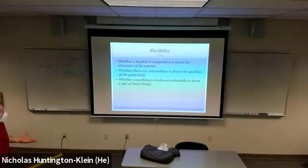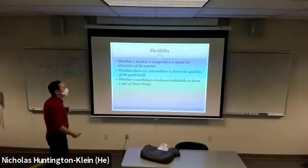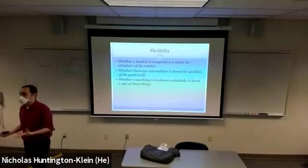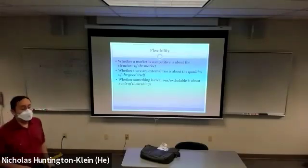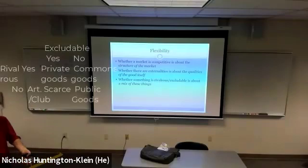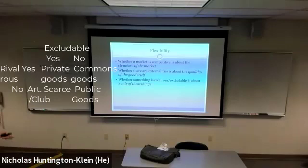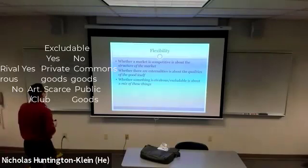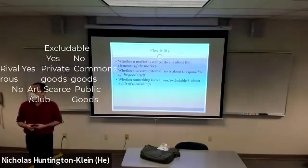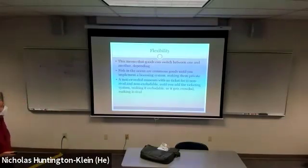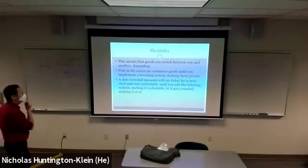Things that are rival or excludable — that's not always a fixed mix. Sometimes it's the structure of the market, sometimes it's the nature of the good itself. For example, commons goods: if it's just a wild west out there, then yeah, it's a commons good. But if you have some sort of regulation that stops you from just harvesting all the fish, then it turns into more of a private good. You can shift things from being one type to another based on policy or market strategy. Goods can switch between types depending on the circumstances.